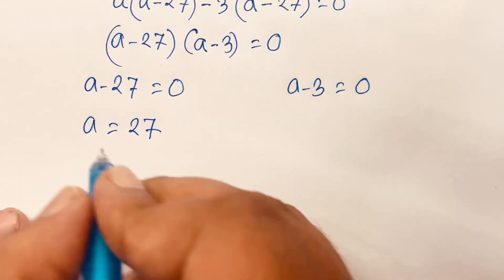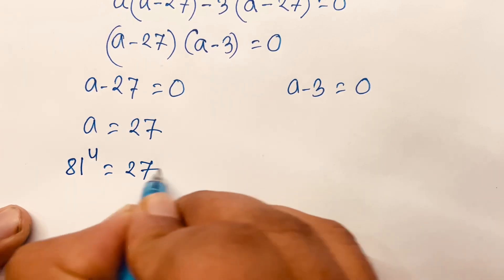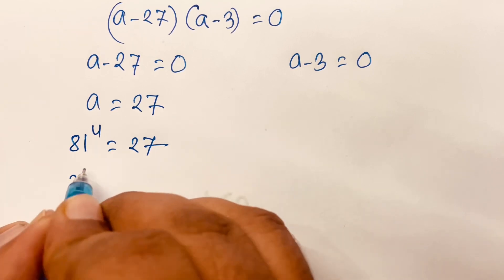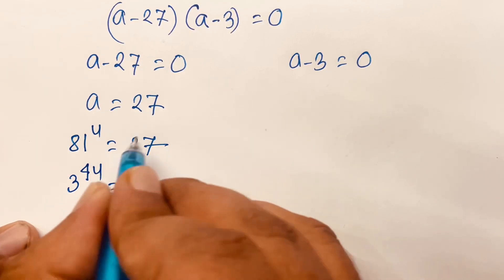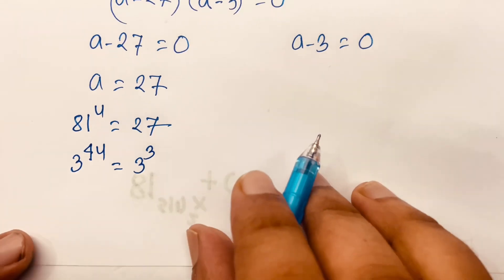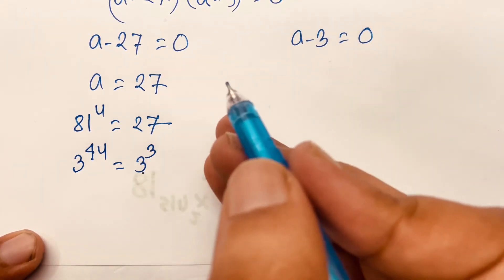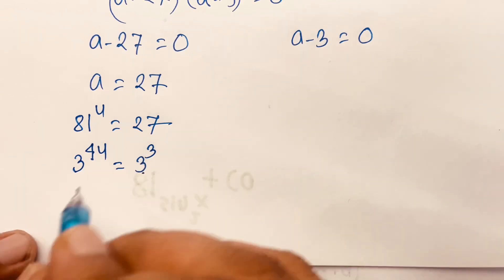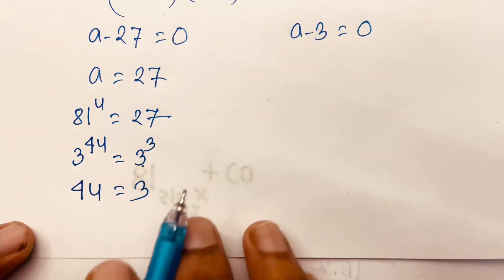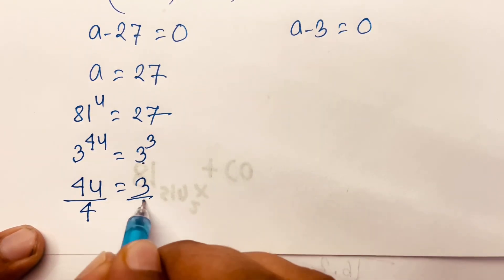So I can say 81 power u is equal to 27. Then 81 is 3 to the power 4, and 27 is 3 to the power 3. Since the bases are the same, according to exponential rules the exponents are equal. So 4u equals 3, and therefore u equals 3 over 4.